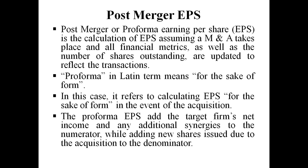If there is any additional synergy — additional benefit — it will be added to the numerator. New shares issued due to acquisition will be added to the denominator. So the formula becomes: Post-merger EPS = (Net Income + Synergy) / New Shares. Using this formula we determine post-merger earning per share.